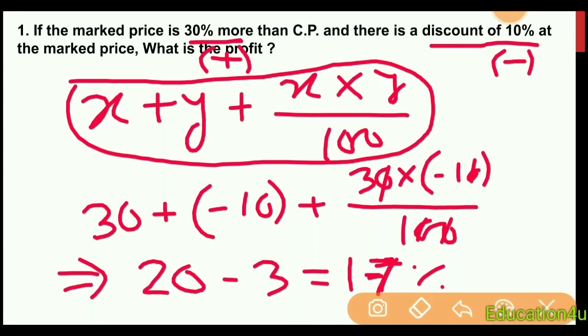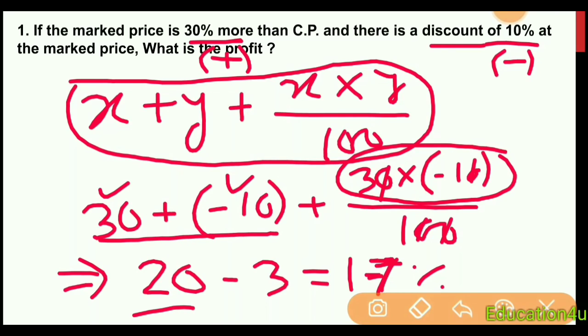Remember this formula for any profit and loss problem. If it's positive, it's profit. If negative, it's loss. The answer is 17 percent profit.